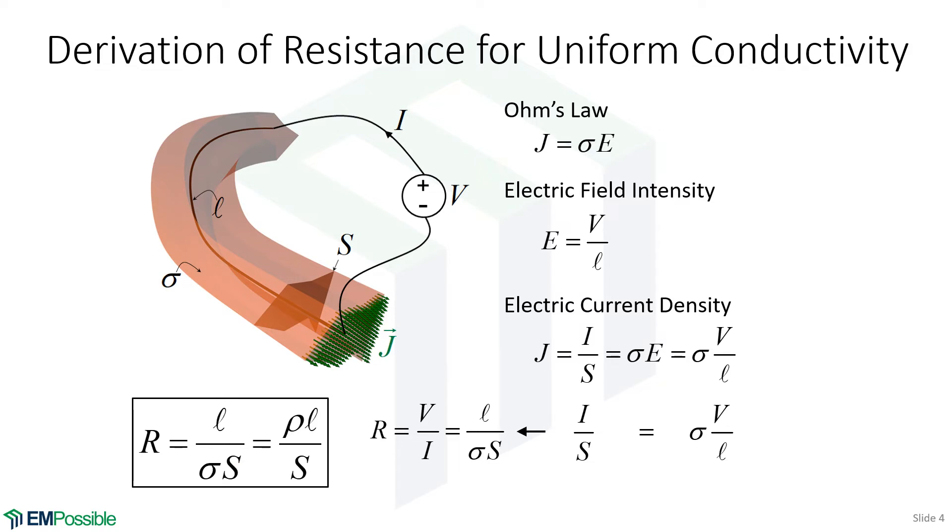And we could do it in terms of the material's resistivity. This is not charge density now. It's a reuse of the same variable. But we can have resistivity, which is just the reciprocal of conductivity. So resistivity times the length divided by surface area.